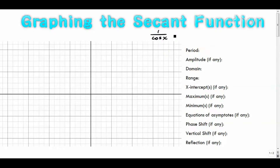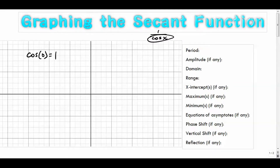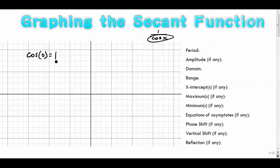What we're going to be doing on this graph is basically finding the cosine value and then just reciprocating it. The main difference between sine and cosine is kind of where they start — the cosine of zero is one, and the sine of zero is zero. The cosine of zero is one, which means the secant of zero is one over one, which is just one.